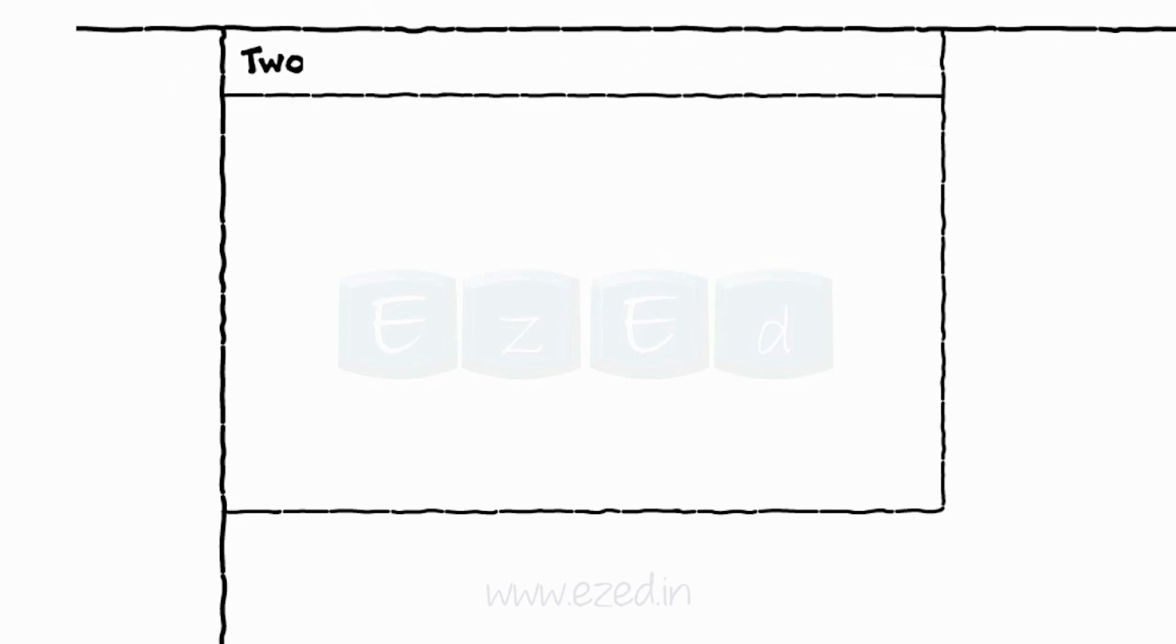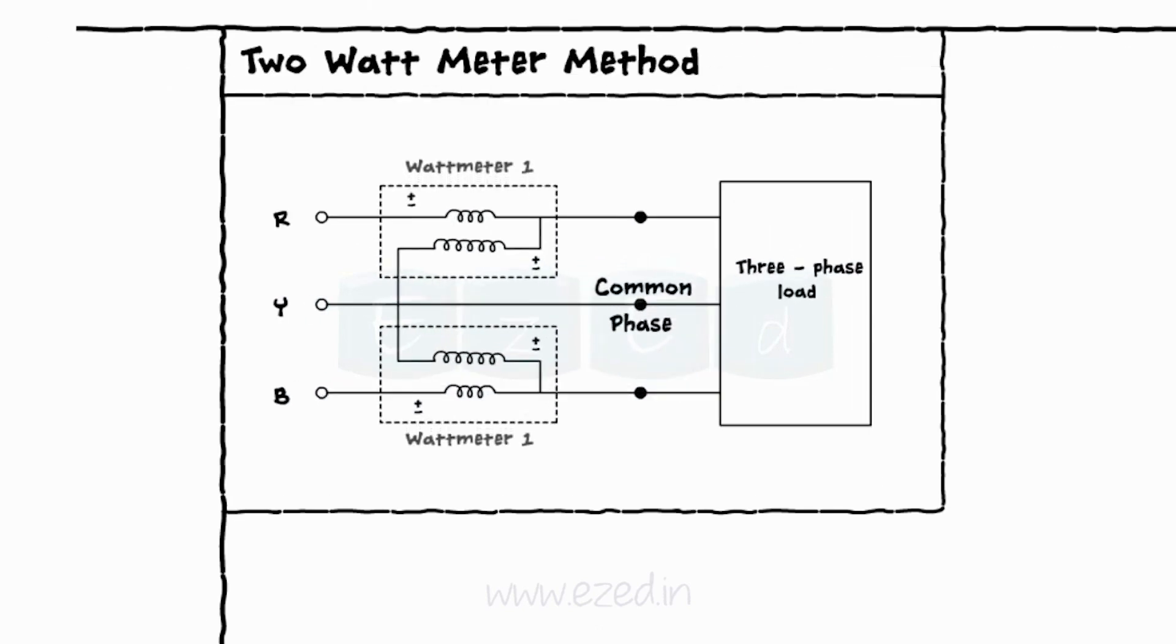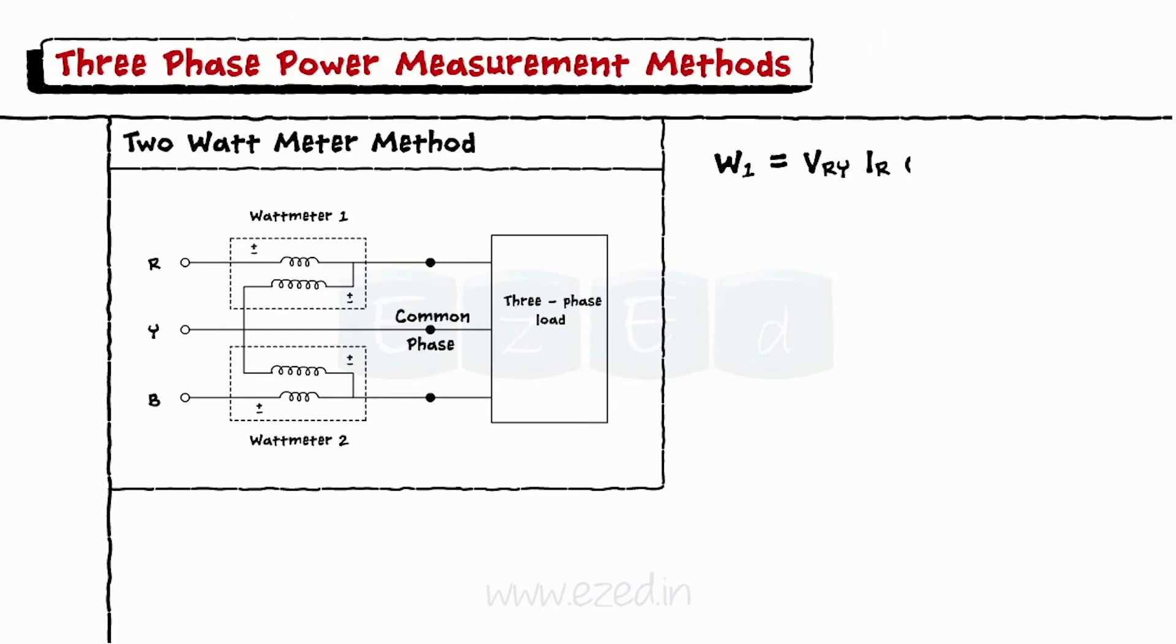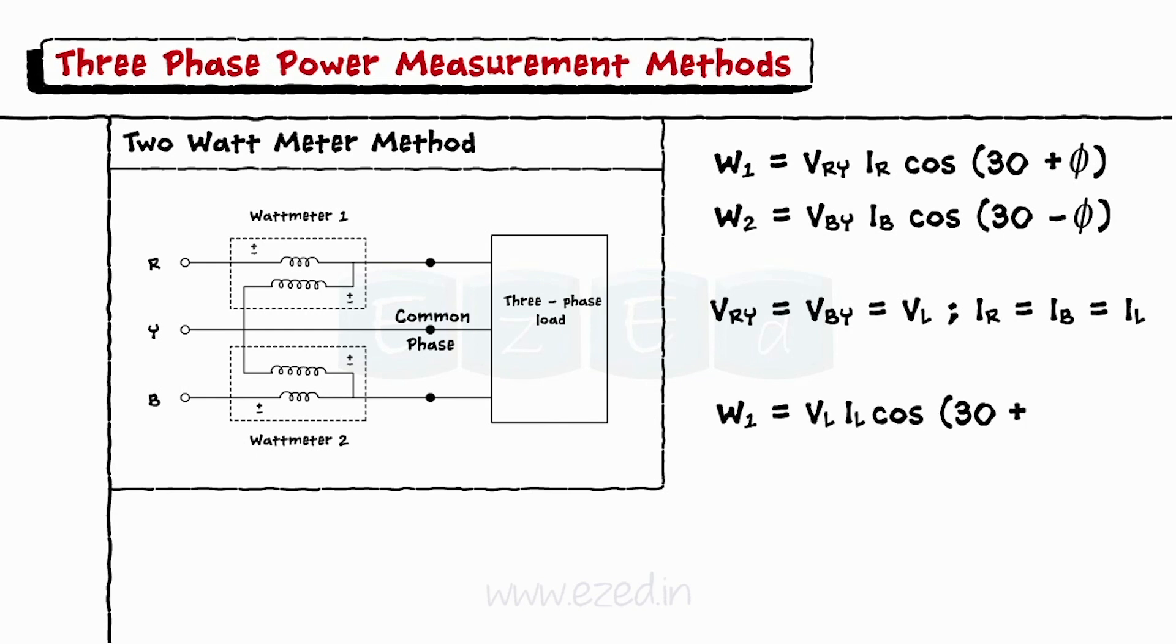The wattmeters give the power reading as W1 equals VRY into IR into cos of 30 plus phi, and W2 equals VBY into IB into cos 30 minus phi. As VRY equals VBY equals VL and IR equals IB equals IL, we get W1 equals VL into IL into cos 30 plus phi, and W2 equals VL into IL into cos 30 minus phi.